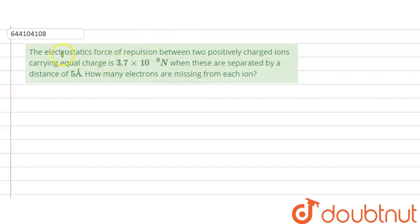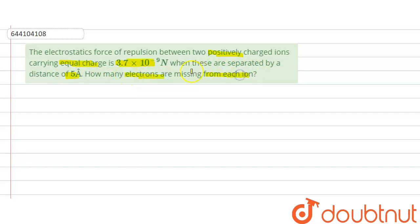In this question, what has been given is that the electrostatic force of repulsion between two positively charged ions carrying equal charge is given as 3.7 × 10⁻⁹ newton. When these are separated by a distance of 5 angstrom, how many electrons are missing from each ion? We need to find that.